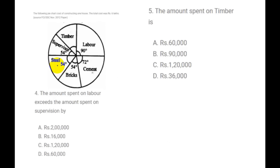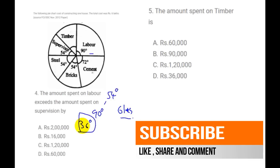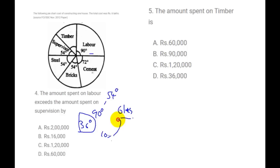Next question: the amount spent on labor exceeds the amount spent on supervision. Labor is 90 degrees and supervision is 54 degrees. 90 degrees minus 54 degrees equals 36 degrees. The total amount is 6 lakhs. 36 out of 360 is 10%, and 10% of 6 lakhs equals 60,000.